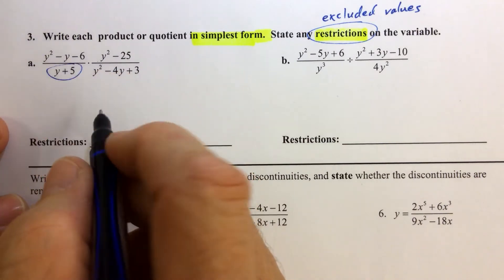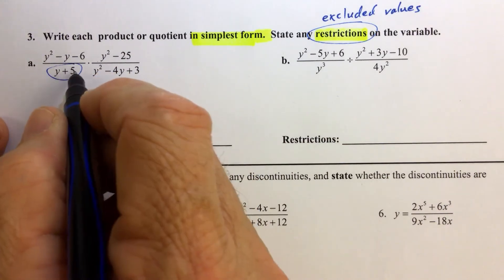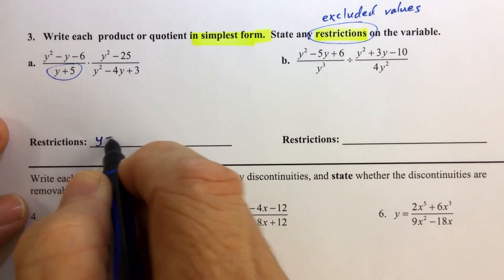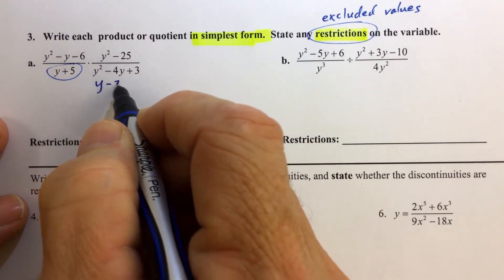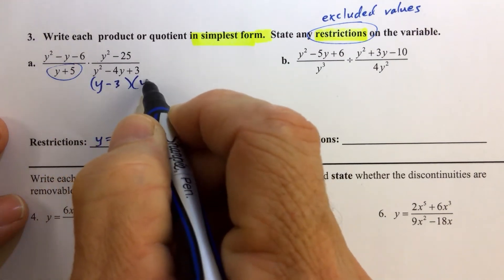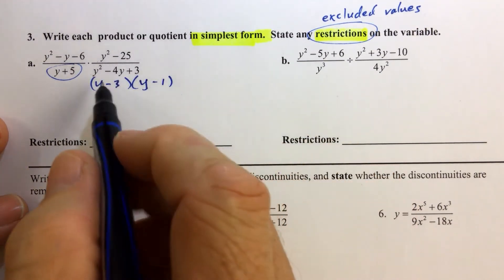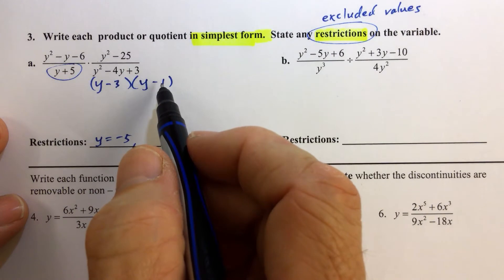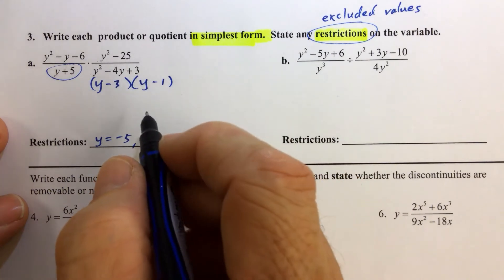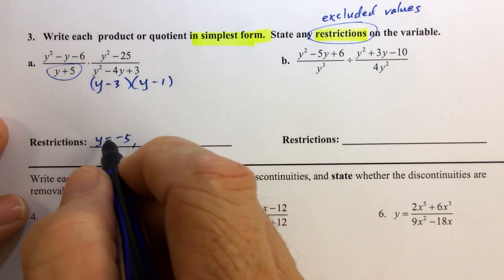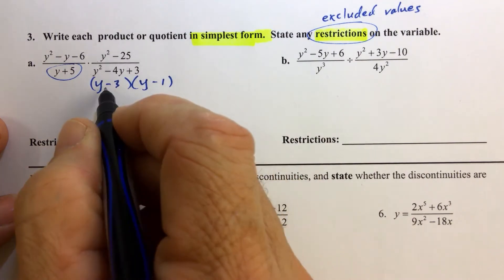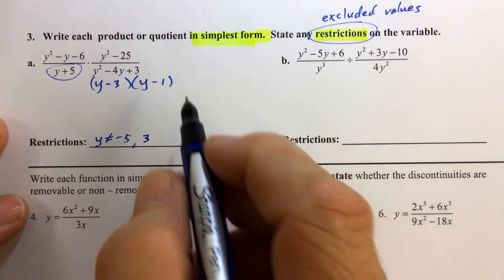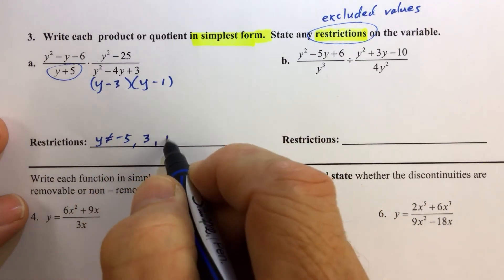Whatever makes the denominator equal to zero: y plus 5 equals 0, so y equals negative 5. Here we have to factor the denominator to figure out the restrictions on the variable. So y minus 3, y minus 1. So the restriction: y cannot equal negative 5, y cannot equal 3 because 3 makes that factor equal to 0, and y cannot equal 1.